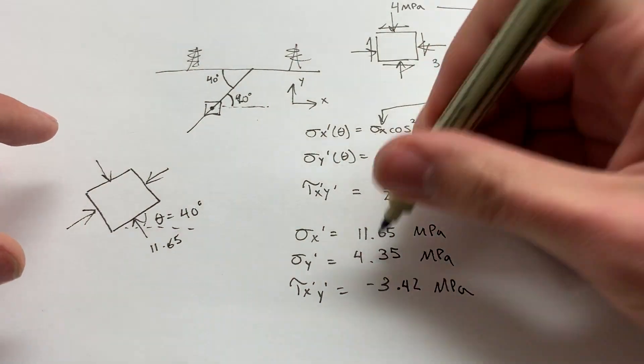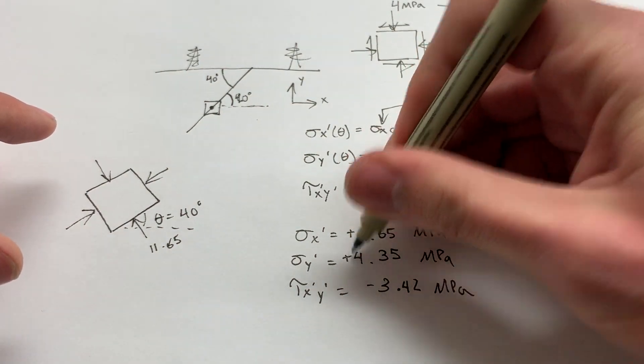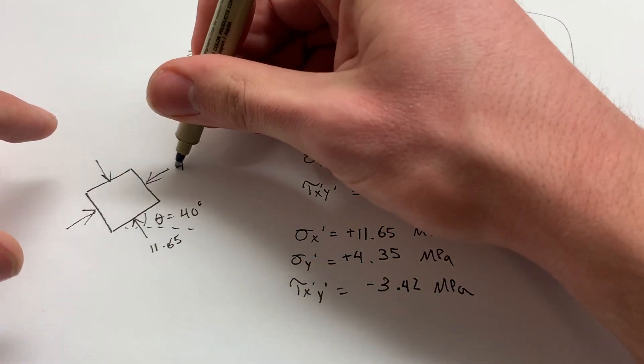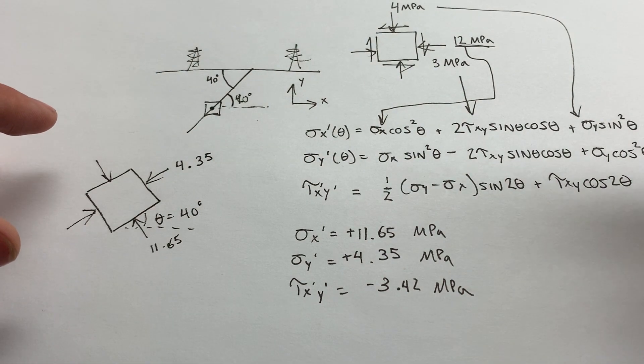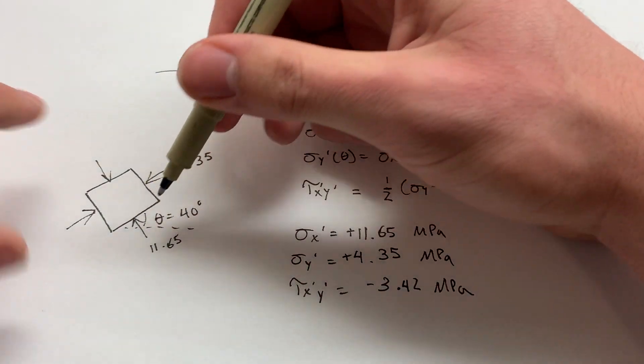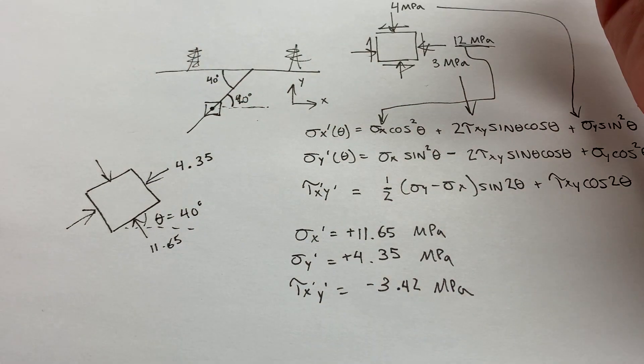It's still in compression, notice, because these are both still positive. So we can be certain they're still in compression. We're going to have 4.35 up there. You'll notice that sigma x increased and sigma y decreased. They're moving further from the principal stresses. So maybe we went in the wrong direction or passed over it or something. I don't know.